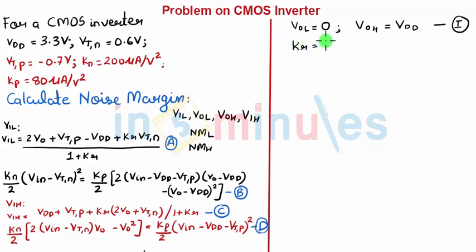If you see the question properly, KR, which equals KN by KP, equals 2.5, and VTN is not equal to mod of VTP. This means it is not a symmetric inverter.